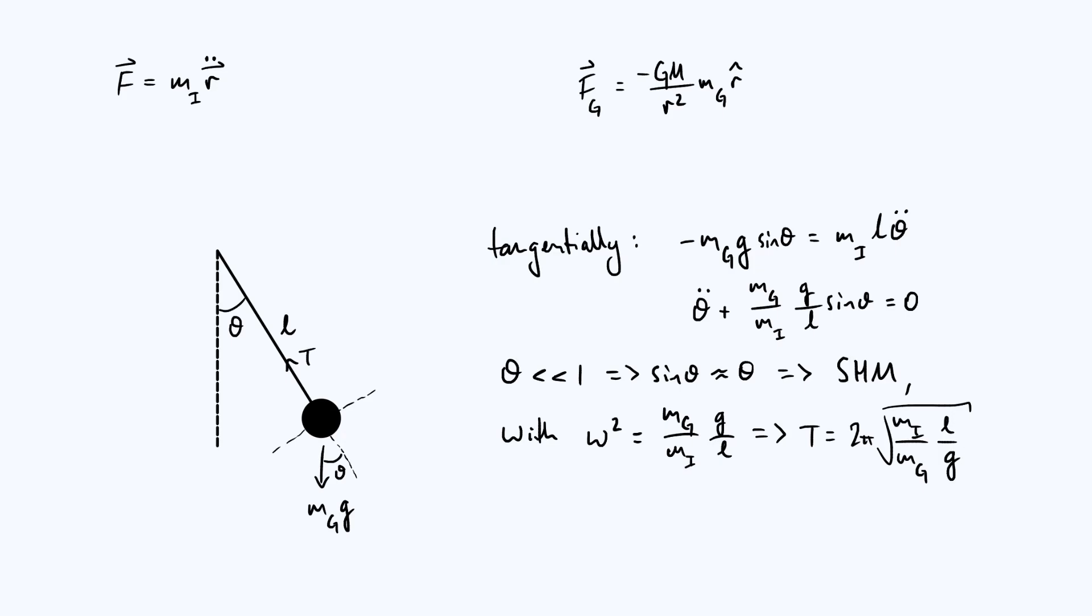Of course, if we say that mi and mg are the same, then the mass ratio cancels and you get 2 pi root L over g, which is the well-known commonly used expression for the period of a pendulum.